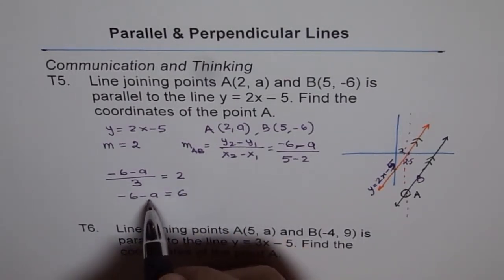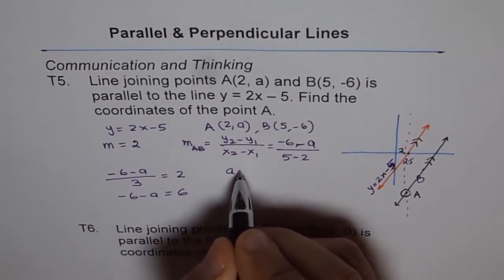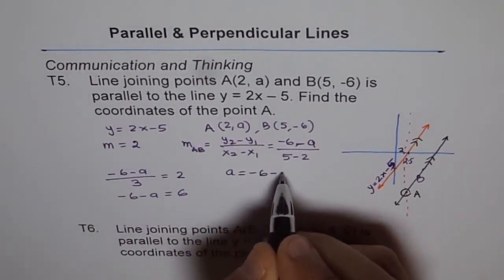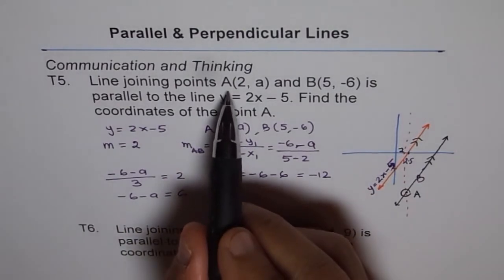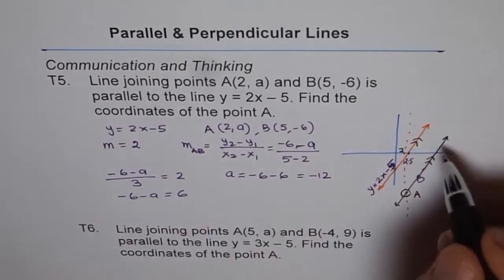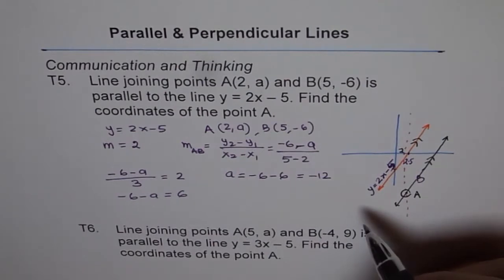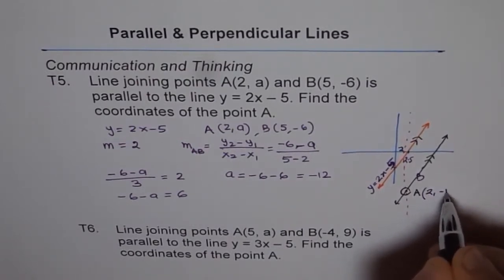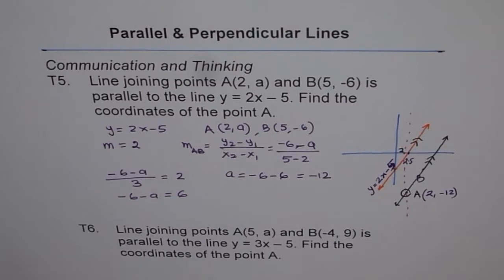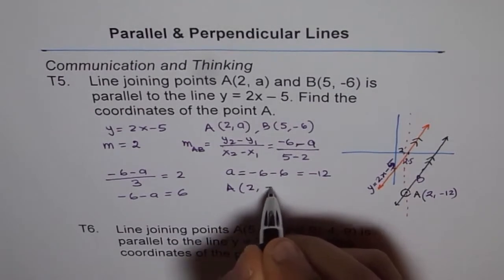Taking a to the other side gives +a, and 6 to the other side gives -6, so a = -6 - 6 = -12. If a = -12, then when points A and B are joined, the resulting line is parallel to y = 2x - 5. Therefore, point A is (2, -12).